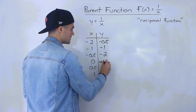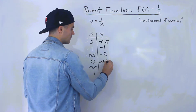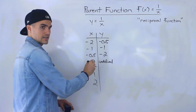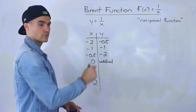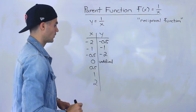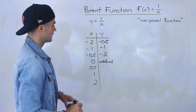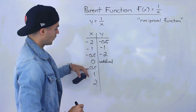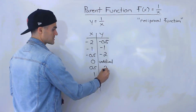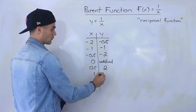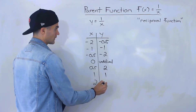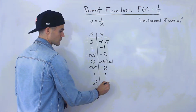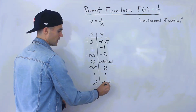So 1 divided by 0 is actually undefined, and I will come back to this later in the video and explain what it means. Moving on, we got 1 over 0.5, which gives us positive 2, 1 over 1 which is 1, and 1 over 2 which is positive 0.5.